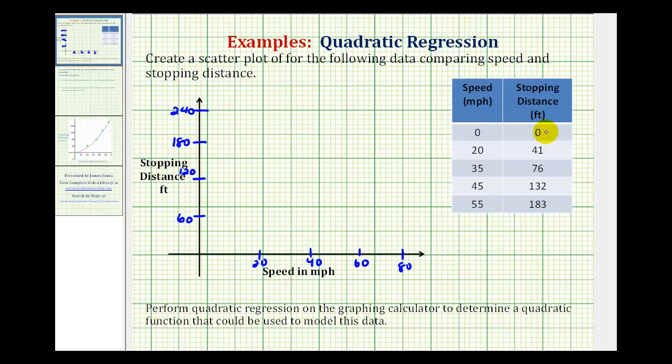And now we'll go ahead and plot the data as ordered pairs. So the first point is 0, 0, which would be the origin. Next we have the point 20, 41, somewhere in here.